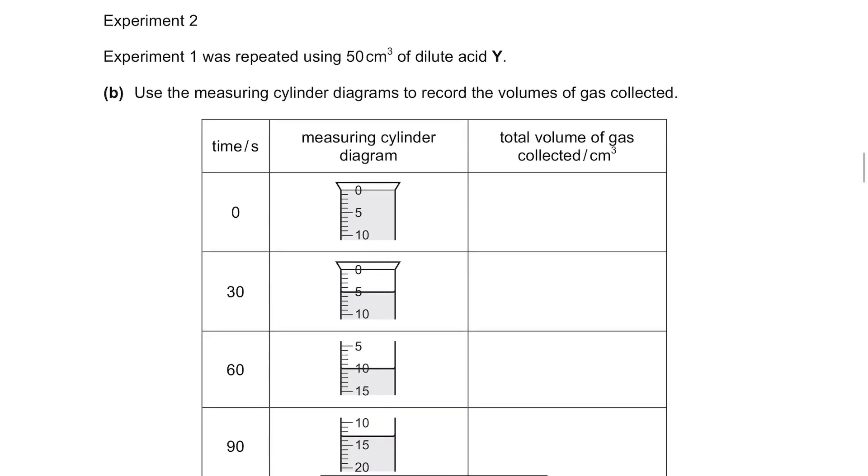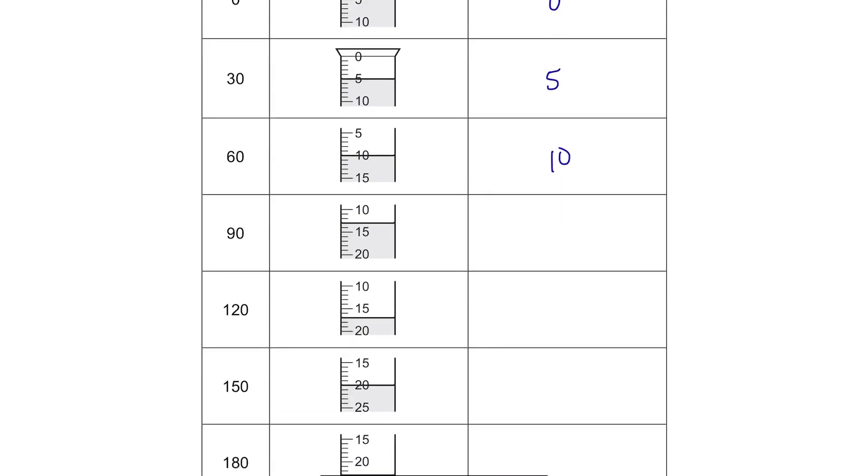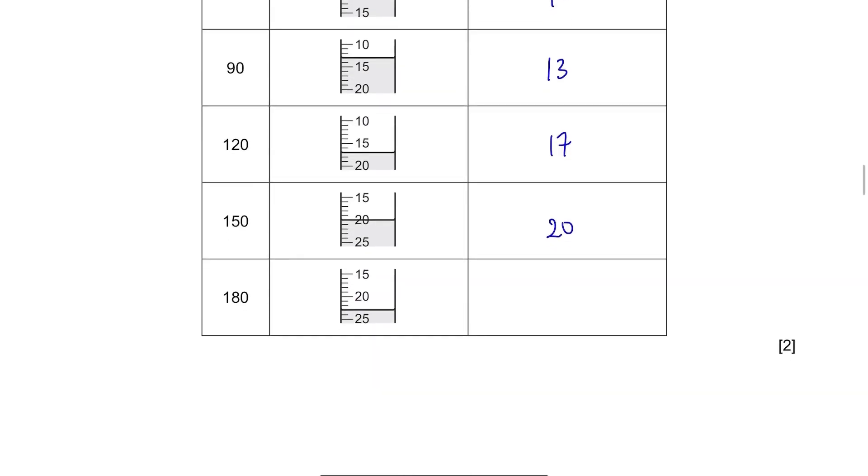Experiment 1 was repeated using 50 cm³ of dilute acid Y. Part B. Use the measuring cylinder diagrams to record the volumes of gas collected. Same thing, just look at the readings. 0, 5, 10, 13, 17, 20, and 23.